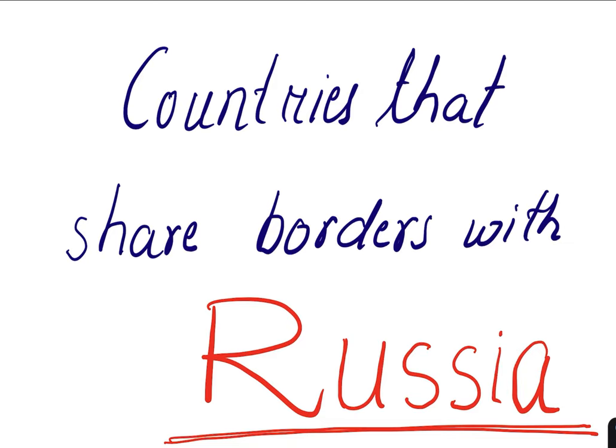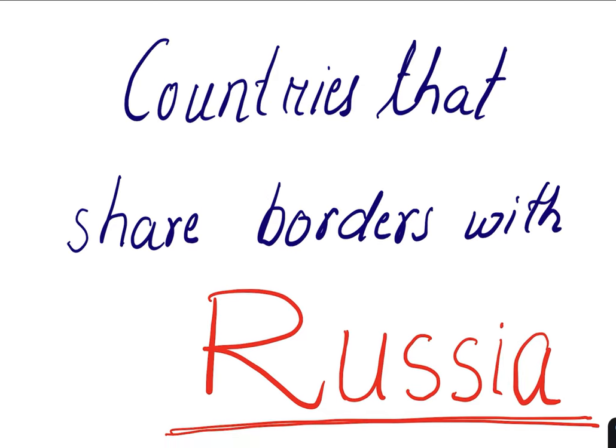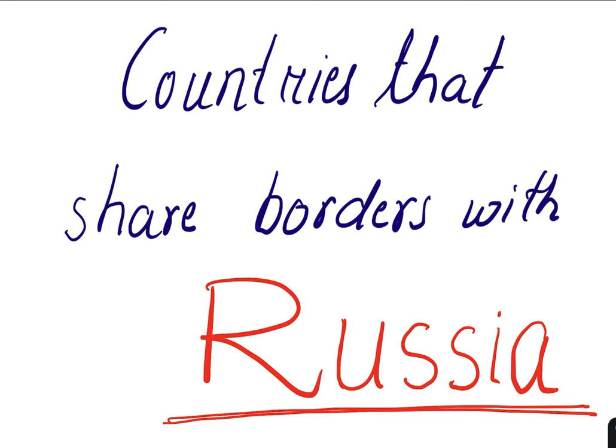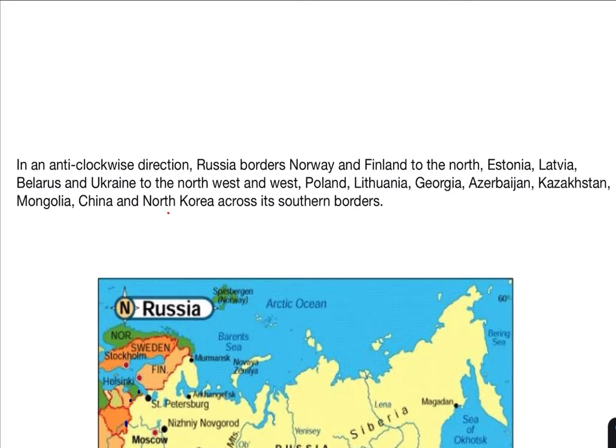Hello and welcome back to my channel. Today in this video we will learn about the countries that share borders with Russia, and we will make a trick to remember these countries. Russia is the largest country in the world and therefore it shares land borders with at least 14 countries and maritime boundaries with two other countries — USA and Japan. If we include the countries that are partially recognized by Russia but not others, the total count will be 16.